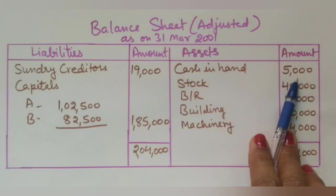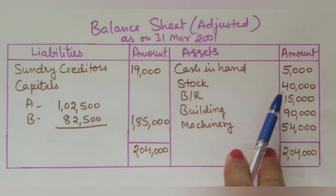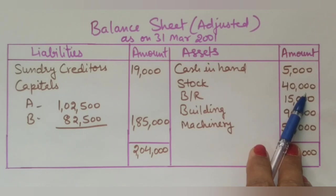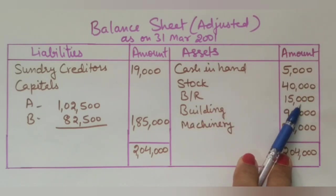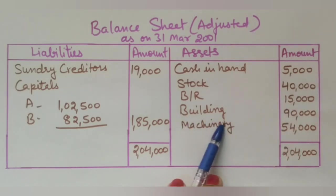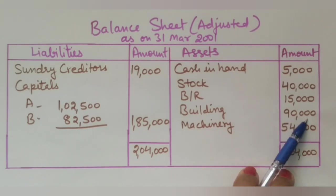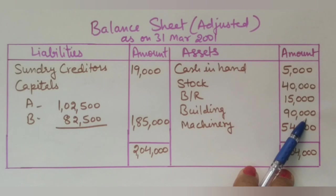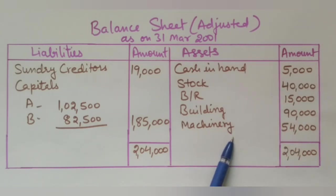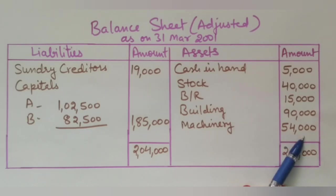Stock was 30,000 and after the increase it is now 40,000 — so 40,000 is recorded in the new balance sheet. Bills receivable remains 15,000 rupees. Building was 1,00,000, reduced by 10,000 — new value is 90,000 rupees. Machinery was 60,000, reduced by 6,000 — new value after depreciation is 54,000 rupees.